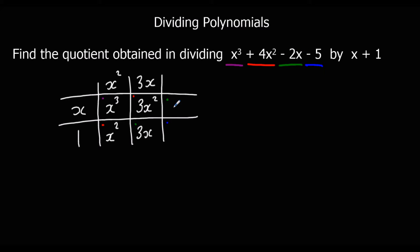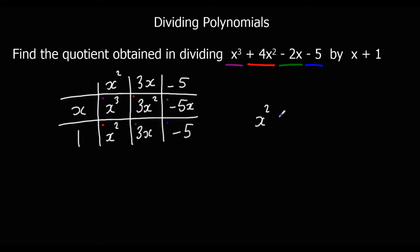Now I can fill in the next box: 3x times 1 is 3x, but I wanted -2x, so I have to take off 5x to give me -2x in total. What multiplies by x to give me -5x? That's -5. Then 1 times -5 is -5, which is what I wanted. So the quotient is x²+3x-5.